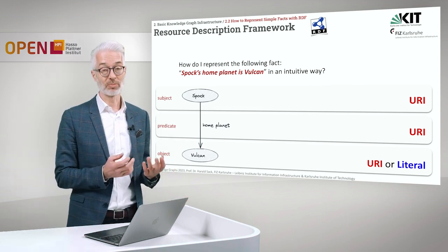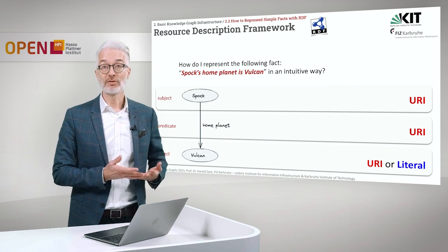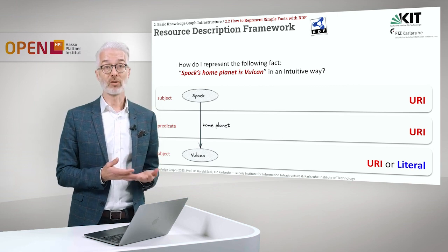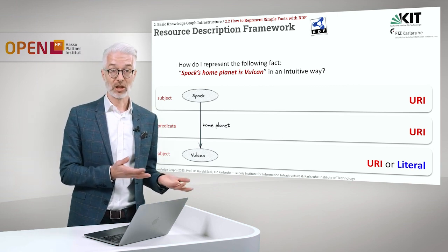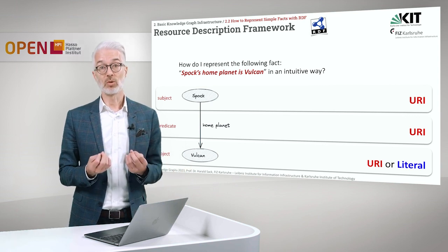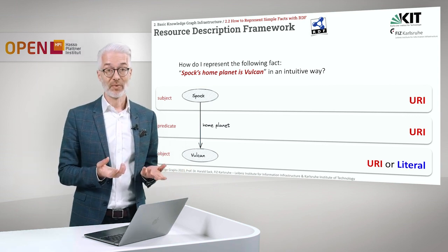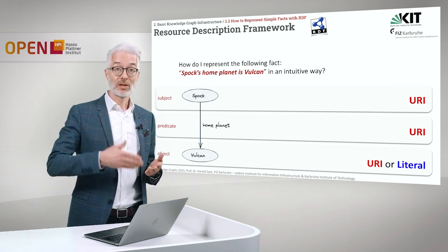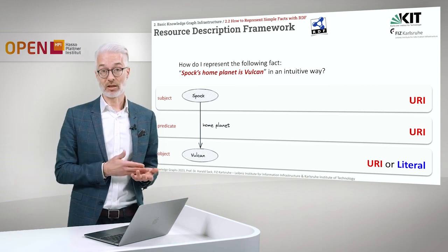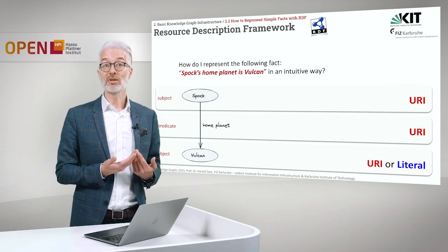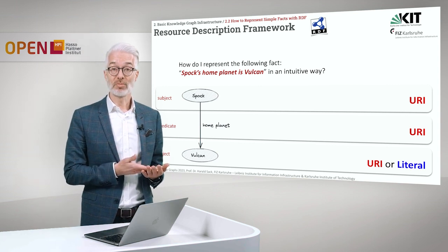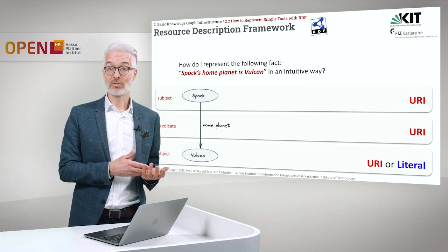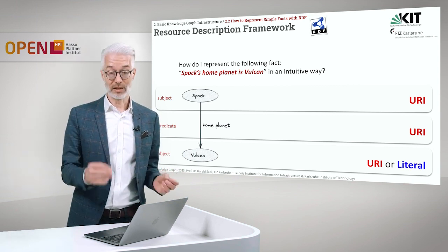If you want to express that with the Resource Description Framework, all of the things we want to identify and address here have to be expressed as a URI or IRI. So the subject, Spock, has to get a URI which denotes Spock, as well as the predicate or the object. We also can denote properties of these entities, and these properties usually are values connected to literals. So the object can also refer to a literal besides a URI.